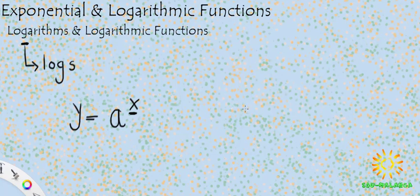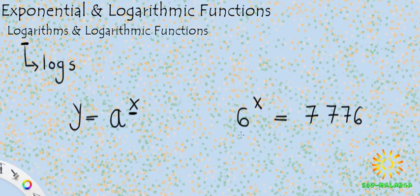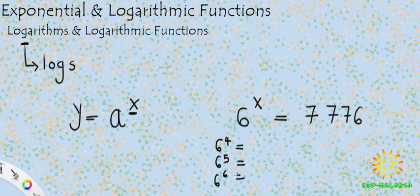Let's use an example. If we were to say 6 to the power of x is equal to 7,776 — how would you solve for this value of x? Before, what we would have done is use an iterative method. We would have said we know that 6 to the power of 2 is 36, 6 to the power of 3 won't be close to this number either, so we'd start by doing 6 to the power of 4, 5, and 6, putting each into our calculator.